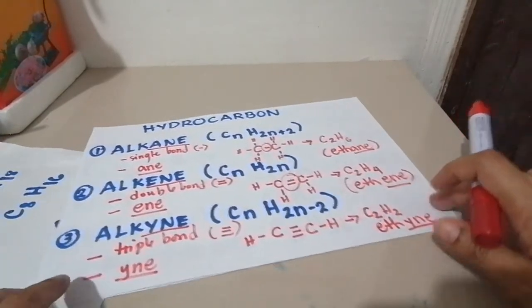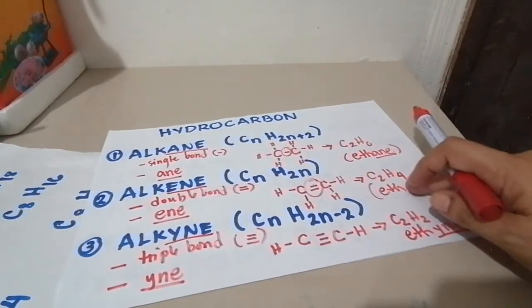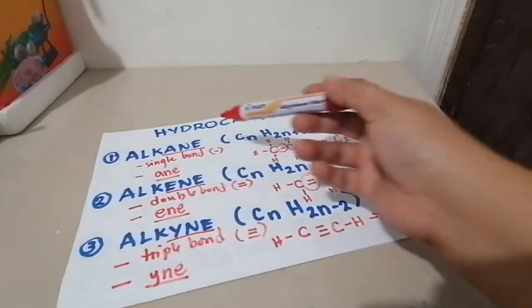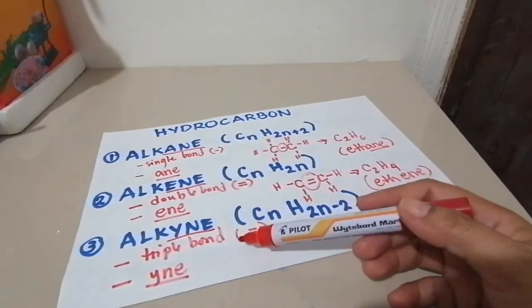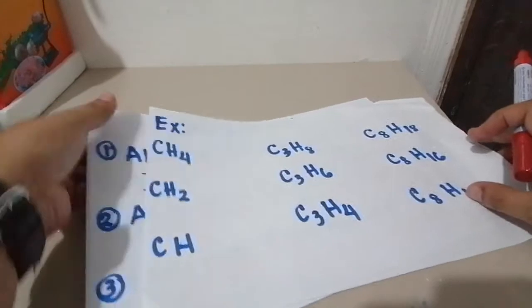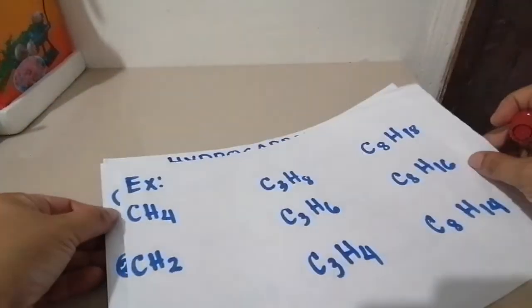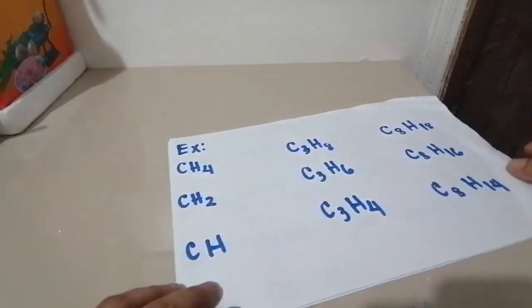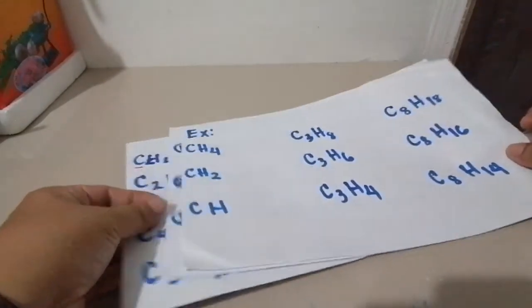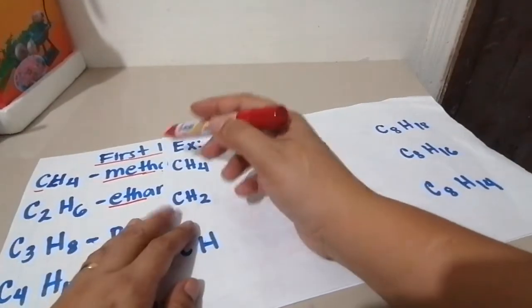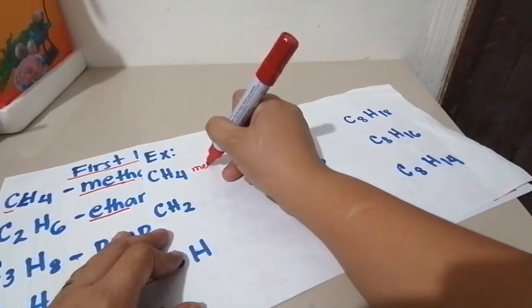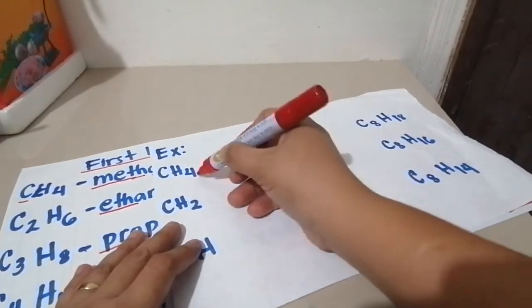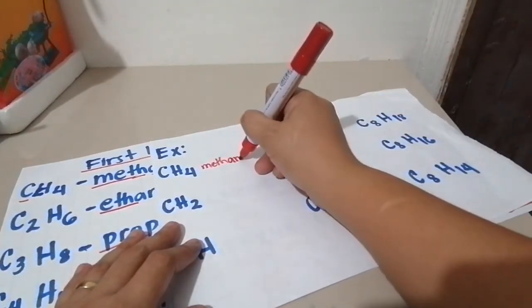That's how we name carbons, or hydrocarbons, and that's how we identify them as alkane, alkene, and alkyne. Another example, this one. As we can see here, how many carbons does each have? All of these have one carbon. And because it's one carbon, what do we use? We use the prefix meth. All of these have meth. But since this is 1 times 2 plus 2, this is an alkane. So this is named as methane.